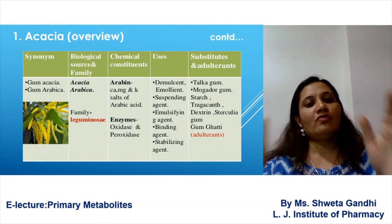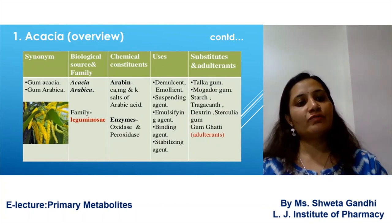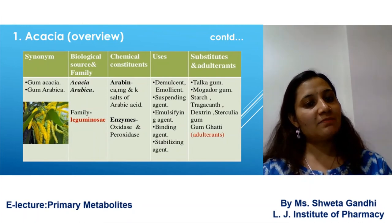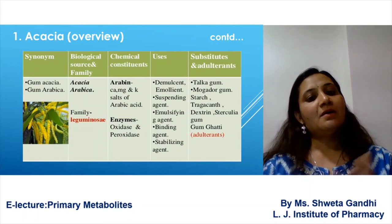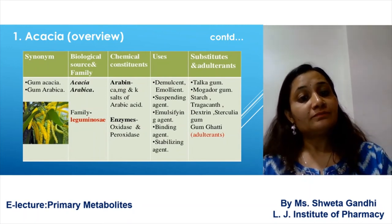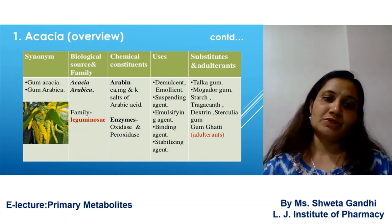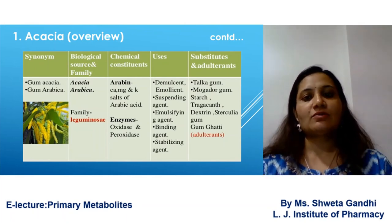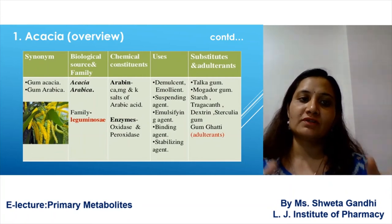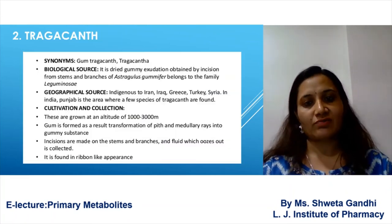Here is an overview of acacia. The synonym is gum acacia or gum arabica. Biological source: Acacia arabica, family Leguminosae. Key details covered include chemical constituents, uses, adulterants, and the chemical structure. Drawing the structure is compulsory for your examination.